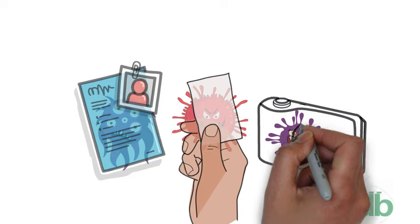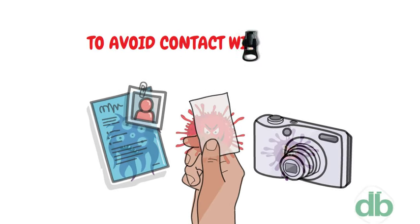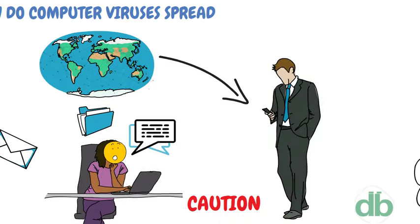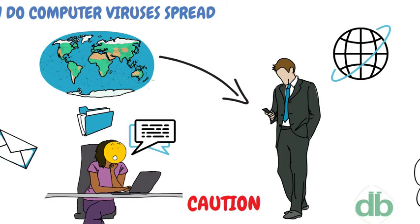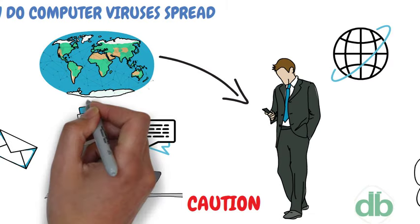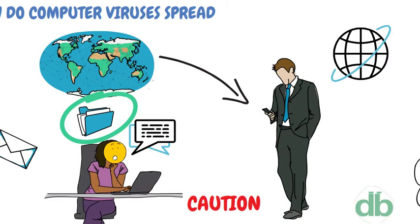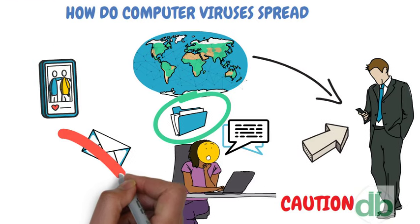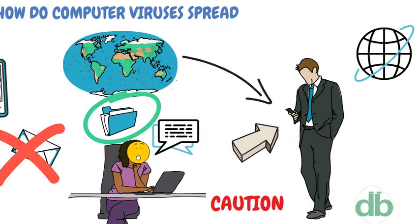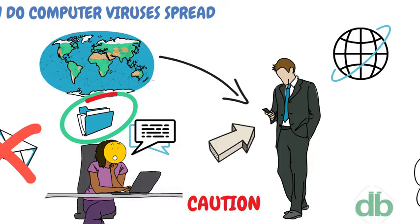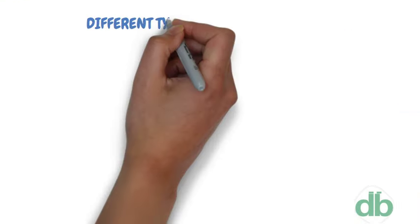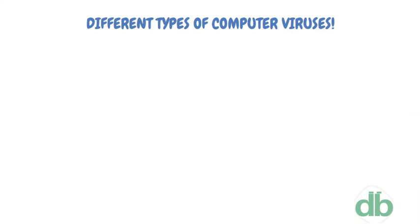To avoid contact with a virus, it's important to exercise caution when surfing the web, downloading files, and opening links or attachments. Never download text or email attachments that you're not expecting, or files from websites you don't trust. Different types of computer viruses: